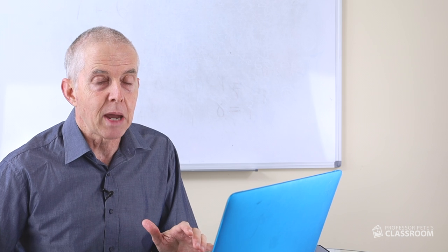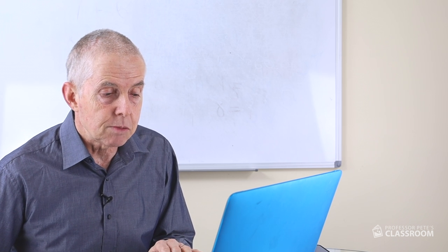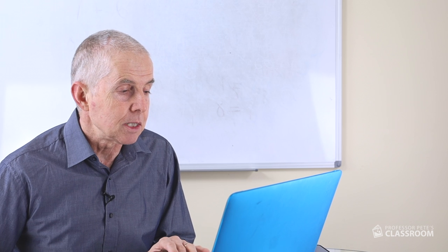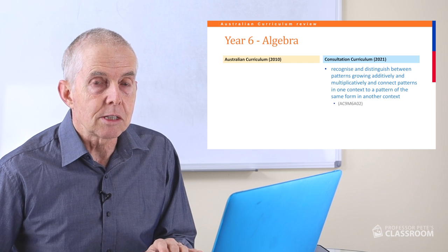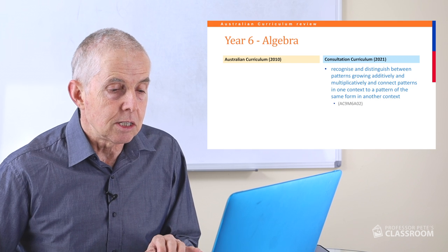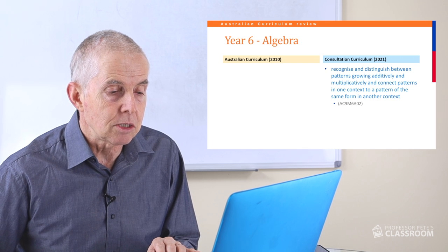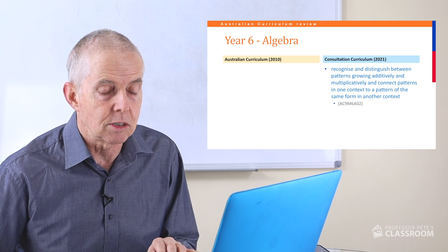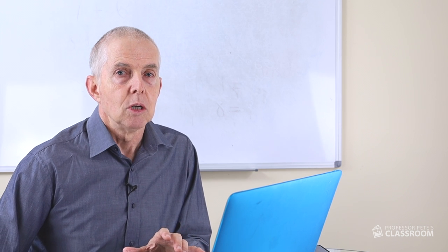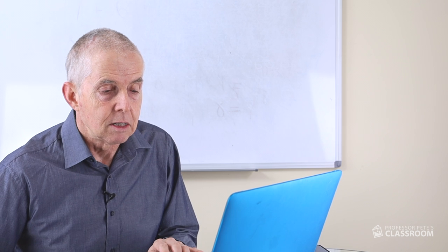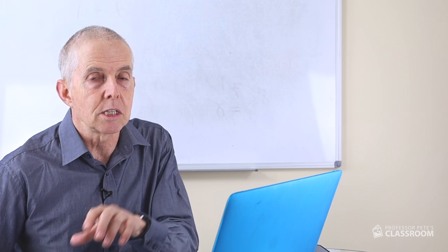Explaining emerging patterns is repeated quite a few times in the proposed new curriculum — it's been added to a little bit to make it clearer, and I basically like this content descriptor. Number two in algebra is completely new; it doesn't exist in the old curriculum: recognise and distinguish between patterns growing additively and multiplicatively and connect patterns in one context to a pattern of the same form in another context. This is quite nice — you can have a pattern in one context that is repeated in a different context with different elements.